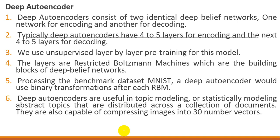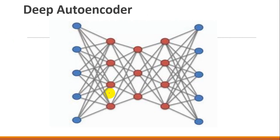Deep autoencoders are useful in topic modeling — abstracting topics distributed across a collection of documents. They are also capable of compressing images into 30-number vectors. In the image shown here, you can see the input node and output node indicated in red, with the hidden nodes showing the complexity and restricted structure. This is an advanced topic and there is additional reading available. If you like this content, share it, and if you haven't subscribed, please subscribe to the channel to get additional videos. Thank you.